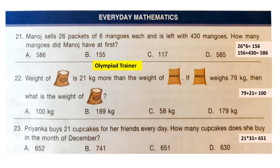Question 21: Manoj sells 26 packets of 6 mangoes each and is left with 430 mangoes. How many mangoes did Manoj have at first? To find the number of mangoes he sold, we multiply 26 by 6, which gives 156. Then, since he is left with 430 mangoes, we add 156 and 430 to get the original total. The correct answer is option A: 586.